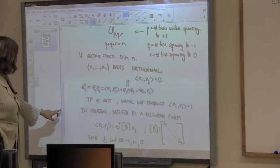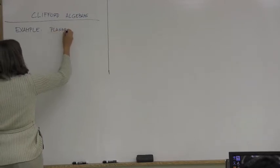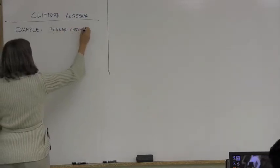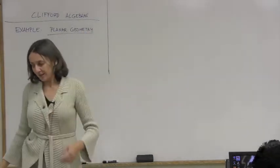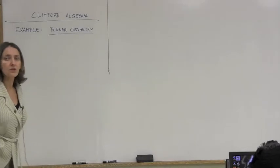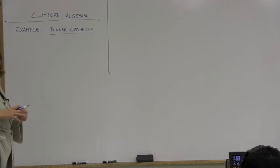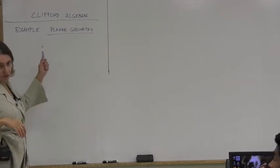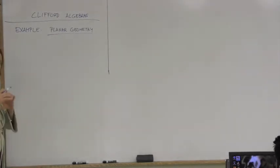Let's do an example: planar geometry. Clifford algebras are called geometric algebras for a reason — this is the smallest algebra that captures the geometry of a given space. Planar geometry and planar motion are all integrated within this algebra. You can define a motion and a geometric entity as elements of this algebra, so you don't have to go outside.